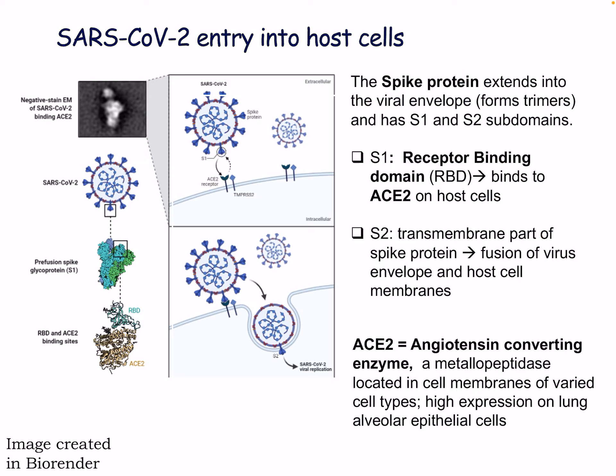Now some SARS-CoV-2 specifics. The spike protein — also known as the S protein — extends from the viral envelope, forms trimers, and has S1 and S2 subdomains. The S1 subdomain contains the receptor-binding domain (RBD), which binds to the ACE2 receptor on host cells. The S2 domain is the transmembrane part that allows fusion of the virus envelope and host cell membranes. ACE2 — angiotensin-converting enzyme 2 — is a metallopeptidase located on cell membranes of varied cell types, with very high expression on lung alveolar tissues but also expressed elsewhere, which is why COVID can affect many parts of the body.